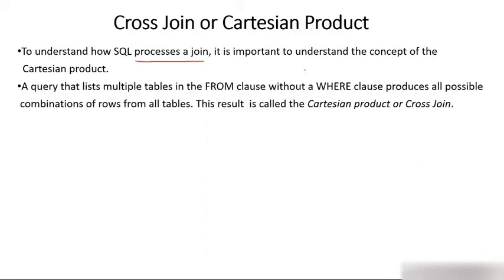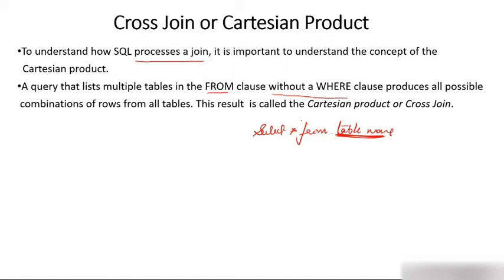A query that lists multiple tables in the FROM clause means it's a kind of query where there exists more than one table after FROM. In a simple query you write SELECT star FROM then one table name. Now in cross-join you have more than one table. The important part is that without a WHERE clause — there will be only the FROM clause and after FROM there will be many tables, more than one table.